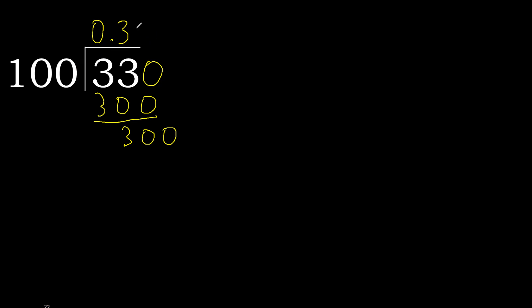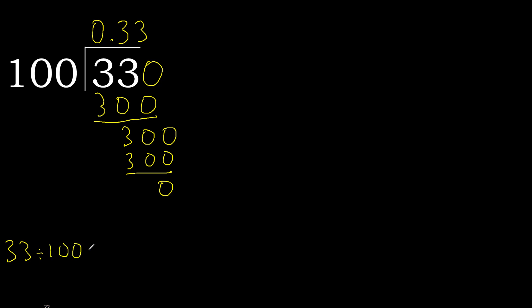100 multiplied by 3 is 300, is not greater. Ok, subtract 0. Therefore finish: 33 divided by 100.